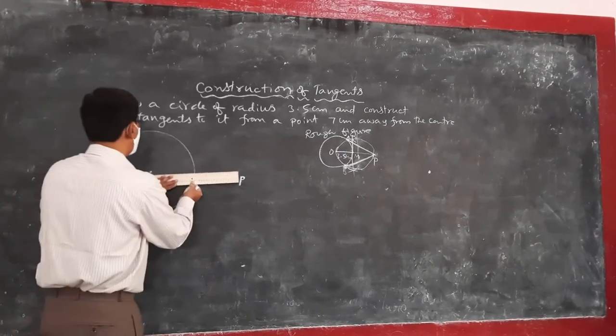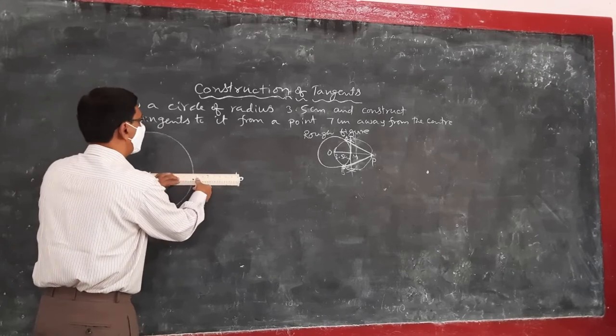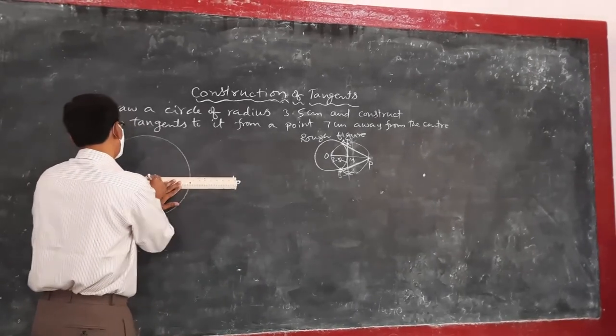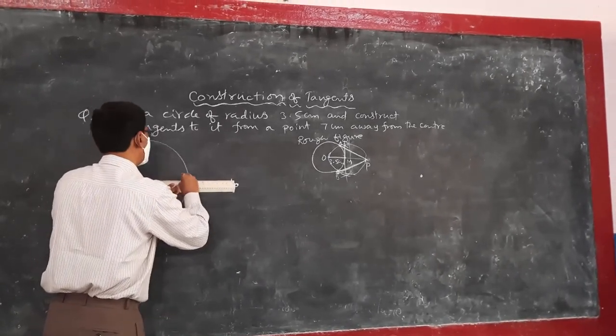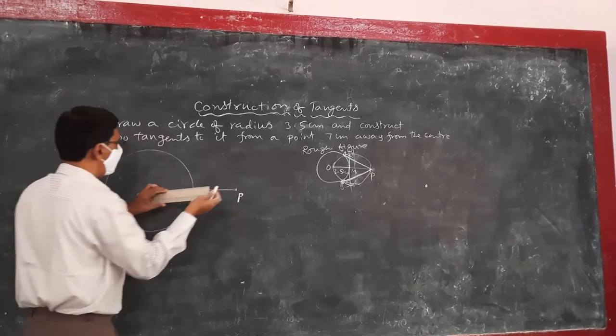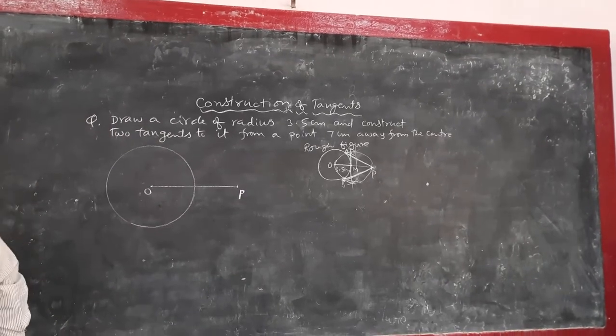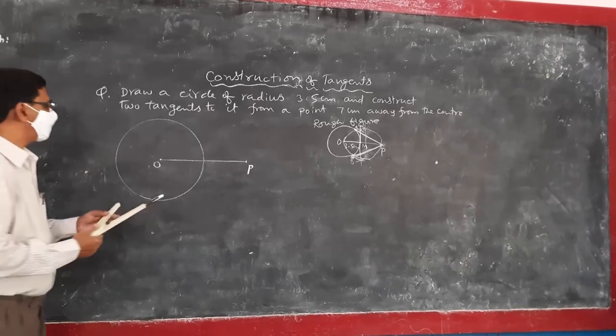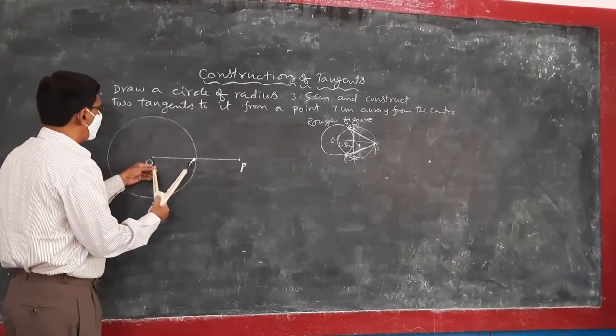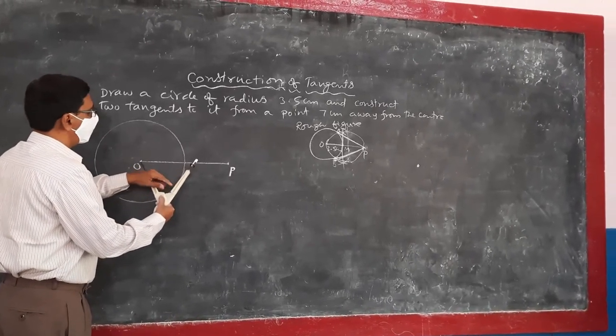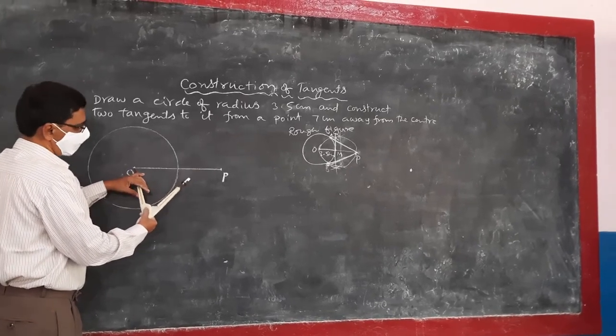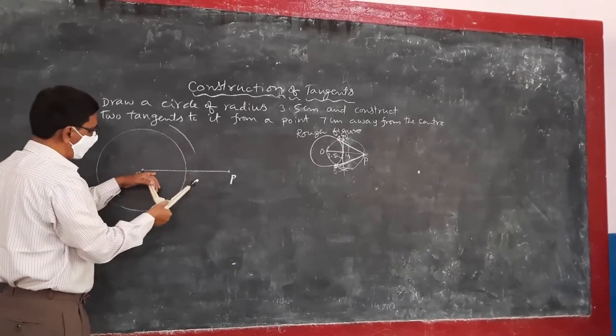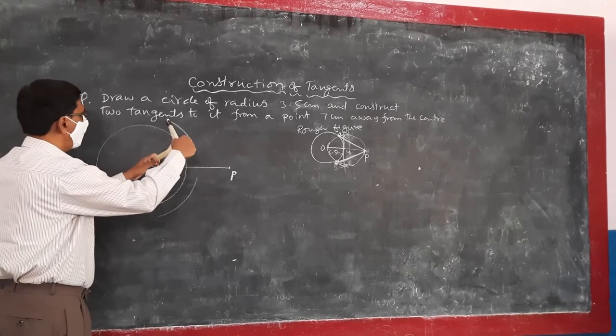Join O and P first. I am joining OP. Next step is to bisect OP. That is the perpendicular bisector for OP. Take the compass. Take more than half of OP. Construct 2 arcs on either side.